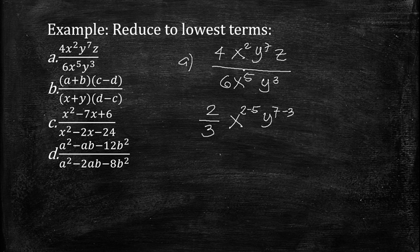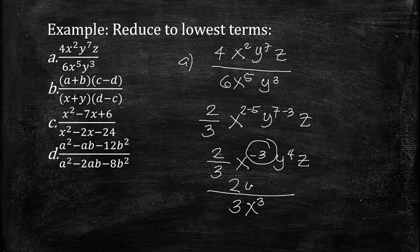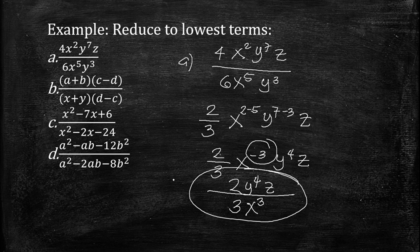So we have 2 over 3, x raised to negative 3, y raised to 4, and z. Since the exponent of x is a negative number, we place that in the denominator. So the final result is 2y raised to 4 times z over 3x cubed. This is the result of letter A.